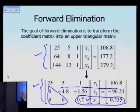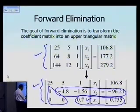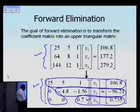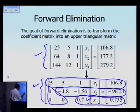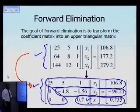If you look at the last equation, x3 is the only unknown. In the second equation, you have x2 and x3, but x3 was just found, so there is only one unknown, x2. In the first equation, you have x1, x2, and x3, but x2 and x3 were already found, so there is only one unknown. That's why converting to an upper triangular matrix enables back substitution — one equation, one unknown at a time.